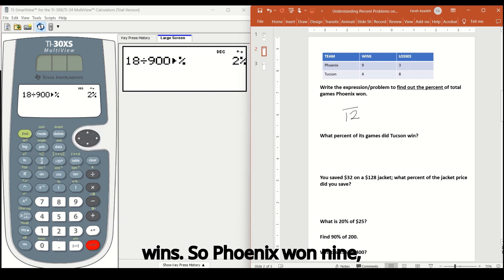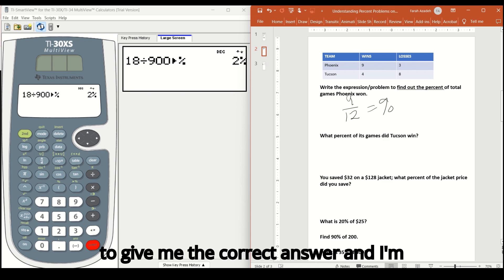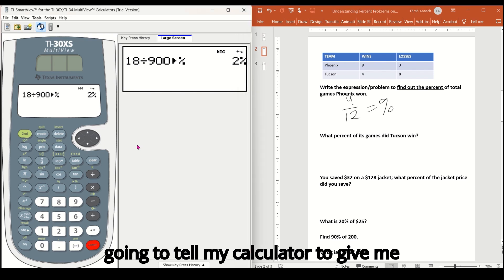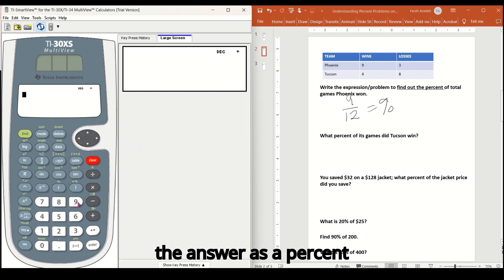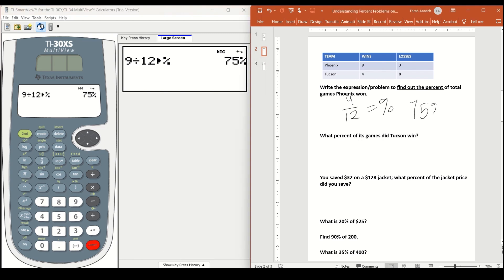So nine over 12 is going to give me the correct answer. And I'm going to tell my calculator to give me the answer as a percent. Nine divided by 12 seconds, close parentheses, enter 75%. So nine out of 12 games is 75%. Next problem.